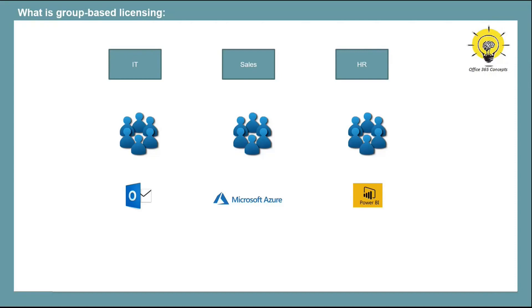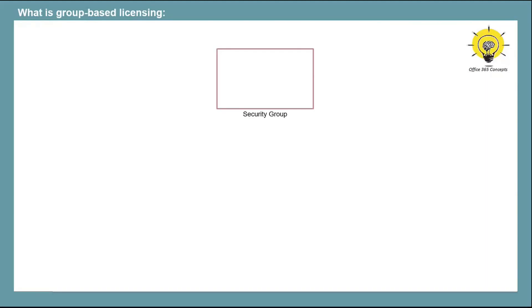With the help of group-based licensing, we can assign the same license to a set of users. In group-based licensing, first we create a security group, then we add the users within the security group to whom we want to assign licenses. You can add these users either manually, one by one, or you can use dynamic queries. We have discussed dynamic queries in groups in one of the previous videos — I will share the link in the comment section. Once you have added users as members within the security group, we assign the license to the security group itself.